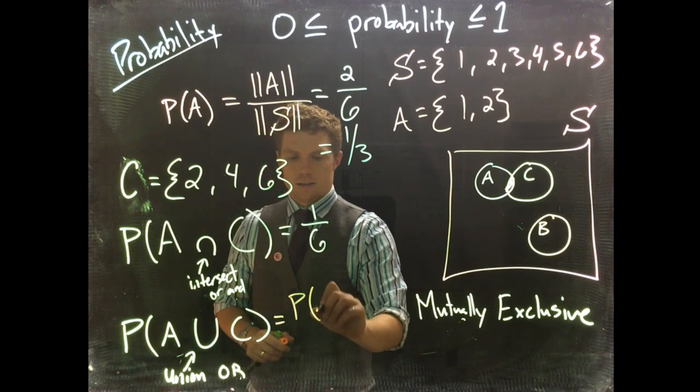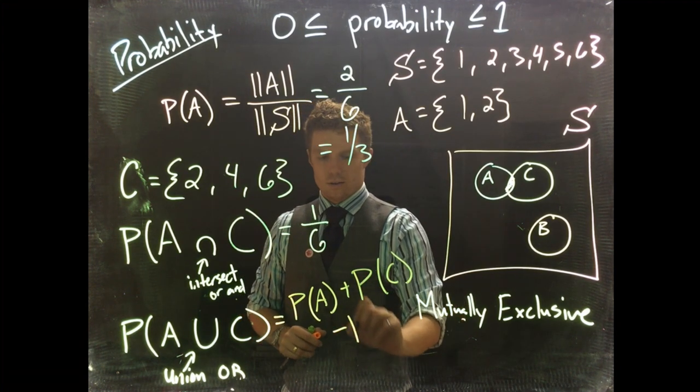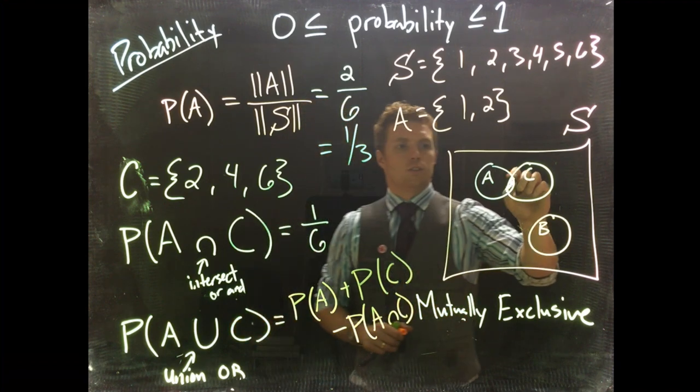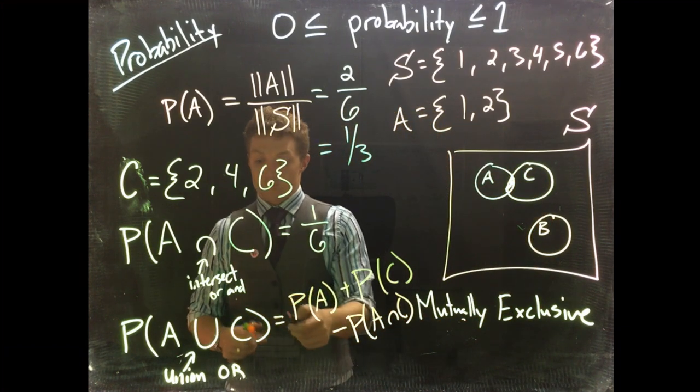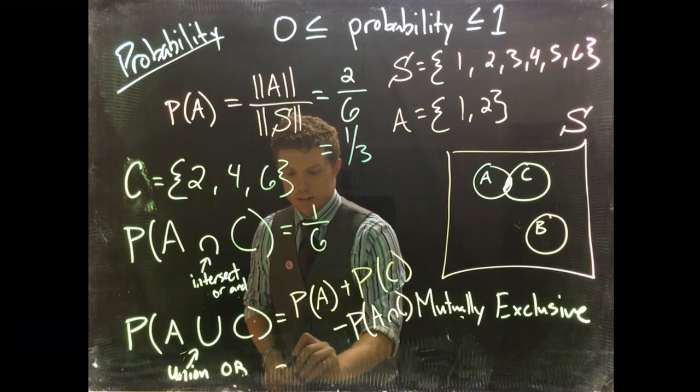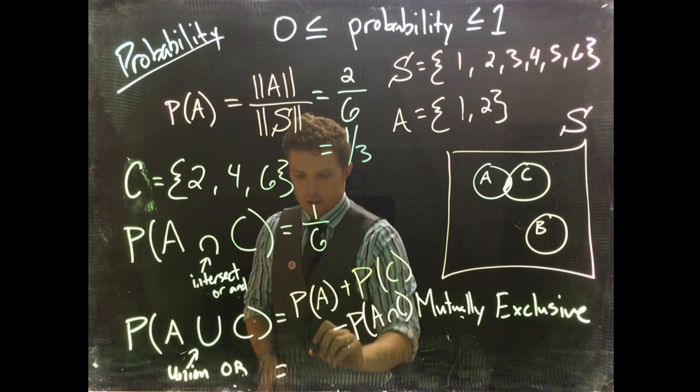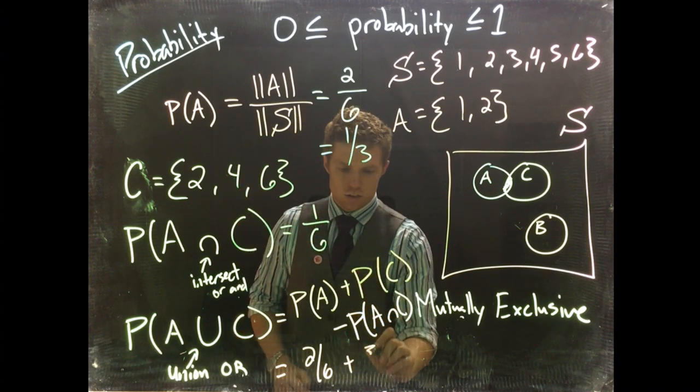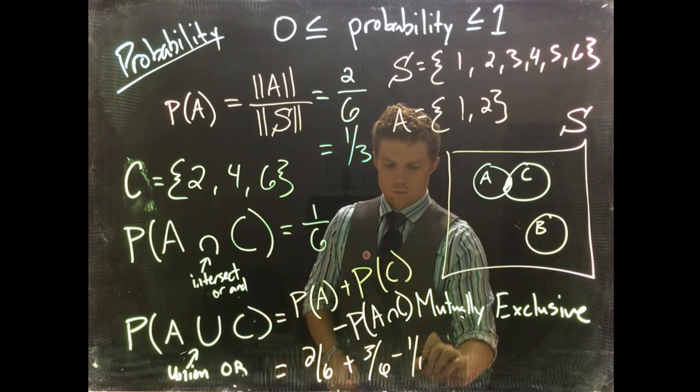To do this, it would be the probability of A plus the probability of C minus the probability of A intersect C. We have to subtract out the intersect because if we don't, we would double count the intersection. For A union C, this equals the probability of event A which was 2/6, plus probability of event C which was 3/6, minus the intersection which is 1/6.